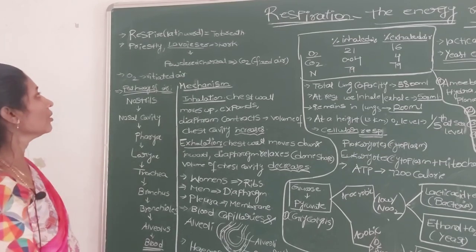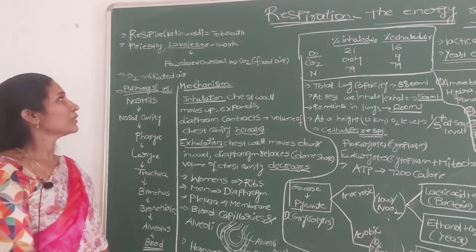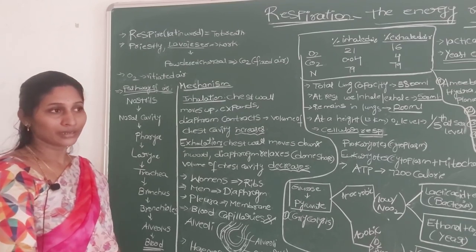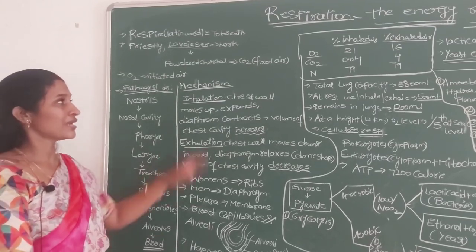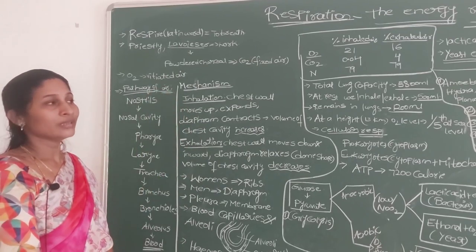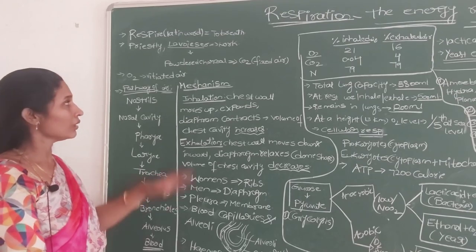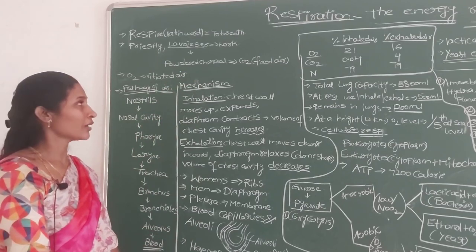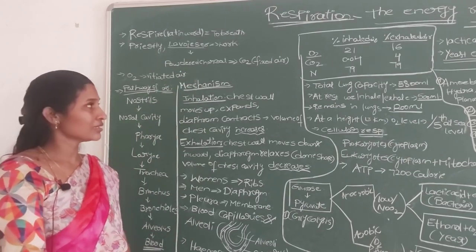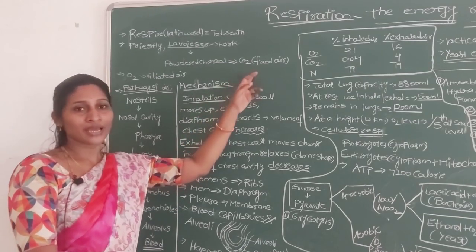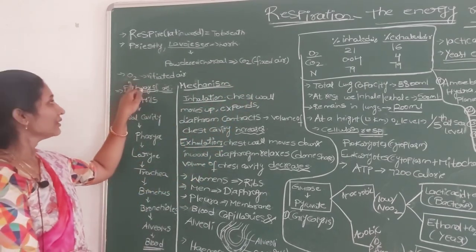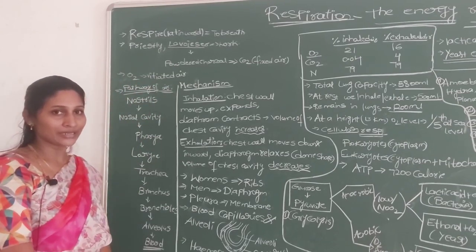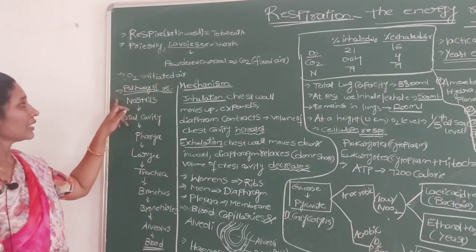Two scientists — Priestley and Lavoisier — did comprehensive work on the discovery of gases, exchange of gases, and how respiration works. Lavoisier found that on heating powdered charcoal, a gas — CO2 — was released. CO2 was called 'fixed air' at that time, while O2 was called 'vitiated air,' meaning expired air.